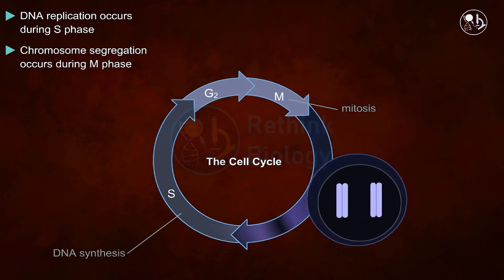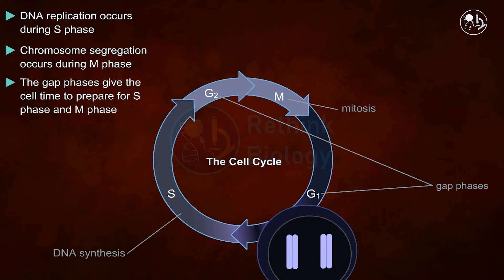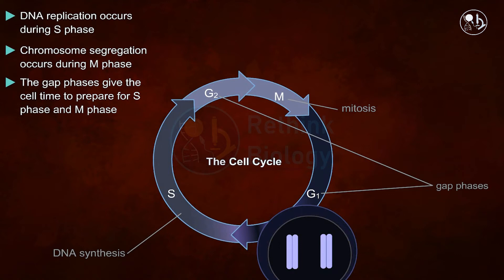In the gap phases, the cell gets the scope to check whether it has the necessary materials and energy for proceeding to the next phase. There are checkpoints within the gap phases. The checkpoint between G1 and S phase checks for errors and ensures that the DNA is undamaged before proceeding to the synthesis phase. The checkpoint between G2 and M phase ensures that the DNA is replicated properly before entering the M phase. The cell cycle may be stopped if these requirements are not successfully met.